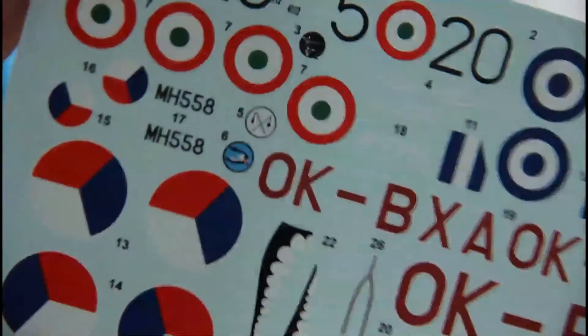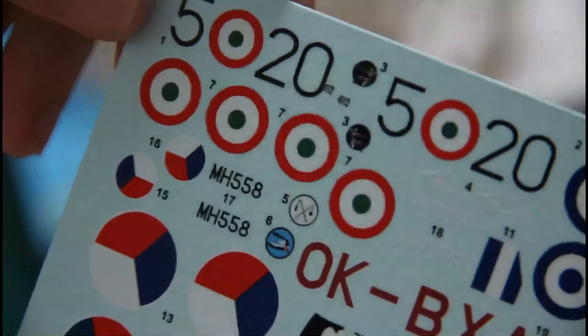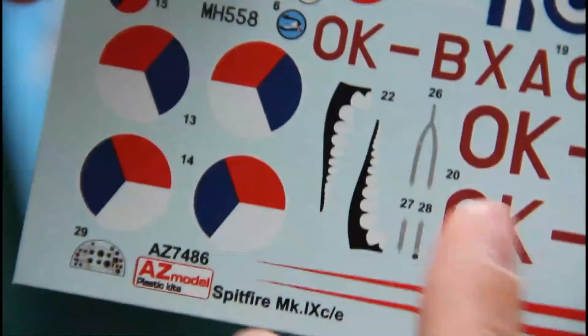And then we have two decal sheets. Here is the first one. As you can see, printing quality is very good. We even have here decal for the dashboard and here decal for the belts.